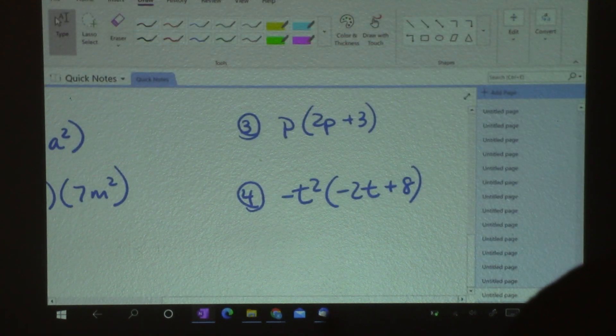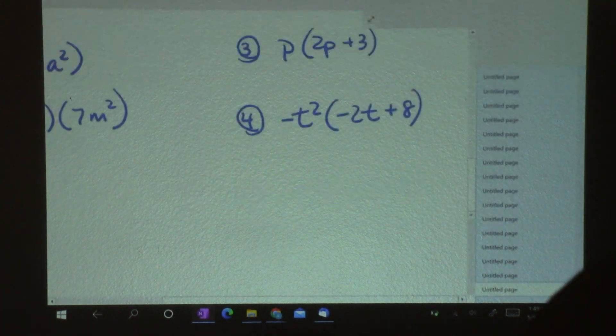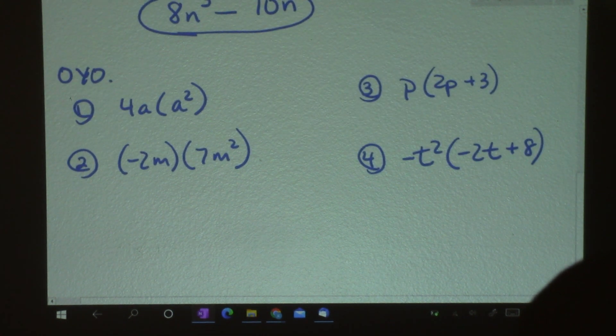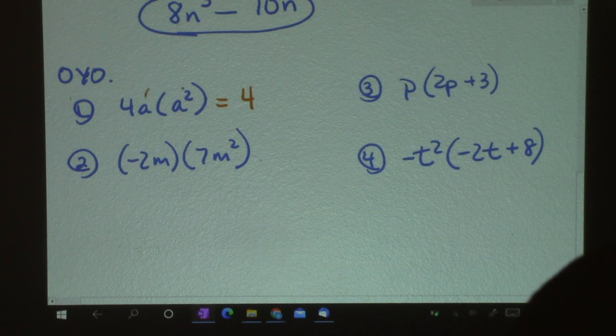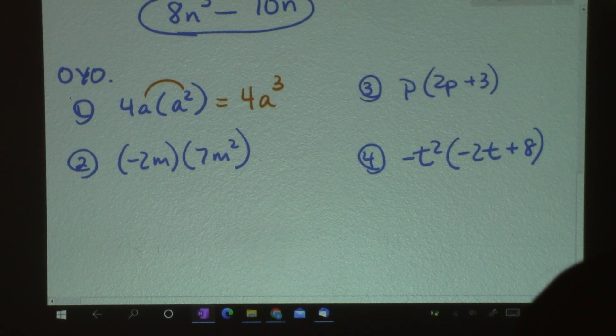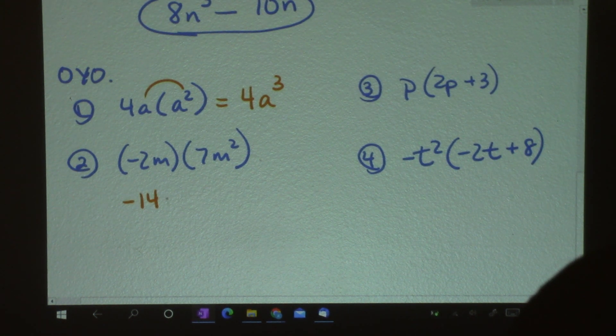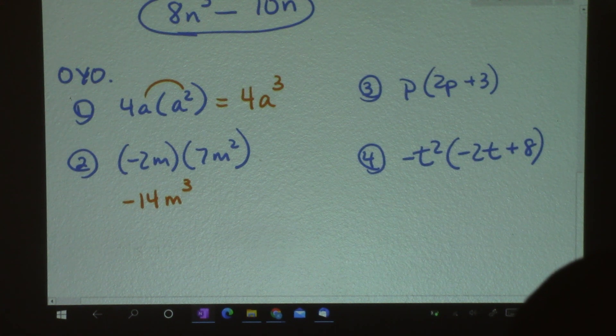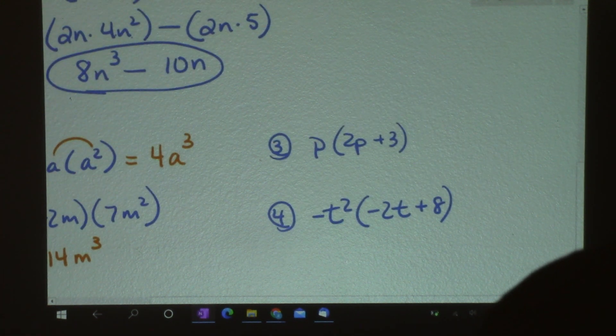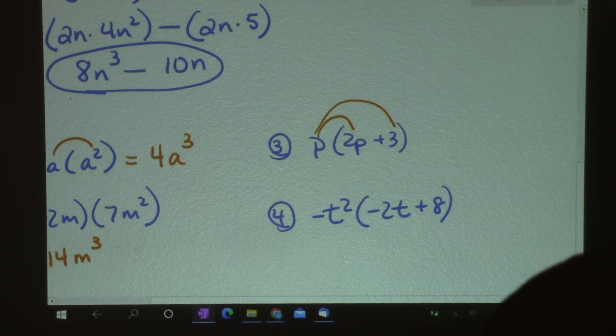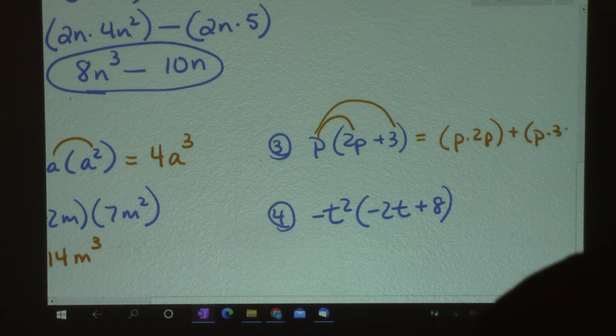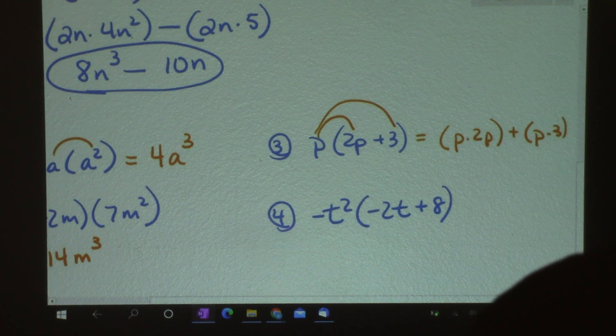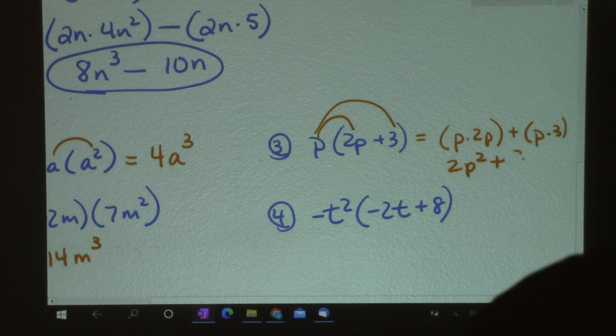And then I'm going to have 2n times the 5. So I've got two terms. So now I'm going to do what I did in number 1 to each one of these, because now I'm adding more and more terms to my problem. So 2 times 4 is 8, and 1n plus 2n is n cubed. And then I have a minus. Don't forget to put that. And then here I've got 2 times 5 is 10, and then I just have 1n, so I bring that along. So here is my answer. 8n cubed minus 10n.